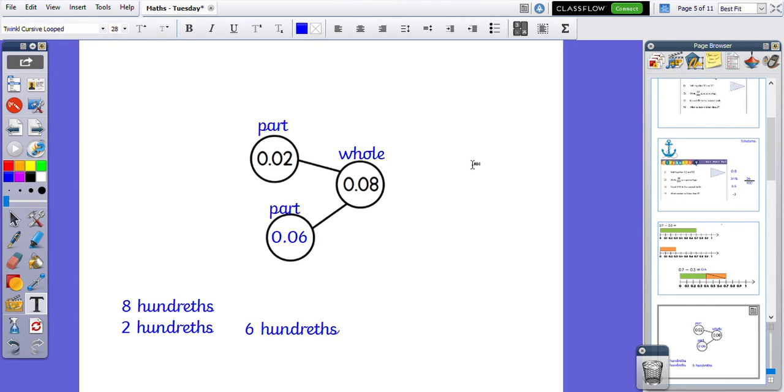You could use what you learned yesterday to see if your answer is right. You can use the inverse to check your answer. If I took 0.02 and I added 0.06, I would do 2 add 6 which gives me 8. 0 add 0 is 0. I'm not forgetting my decimal point which lines up with where I started. So we can see that our answer is correct.